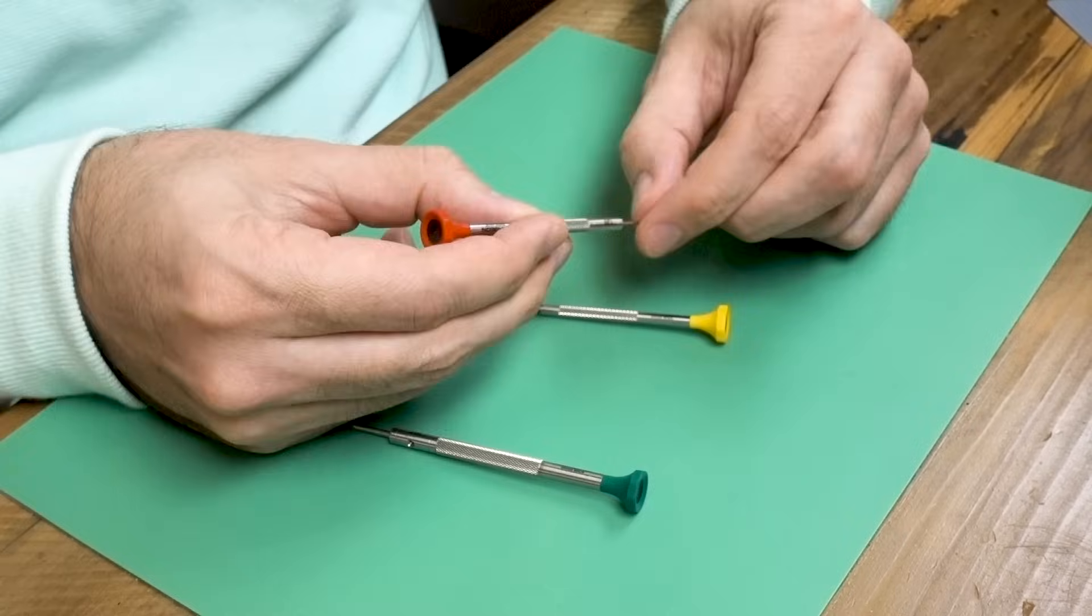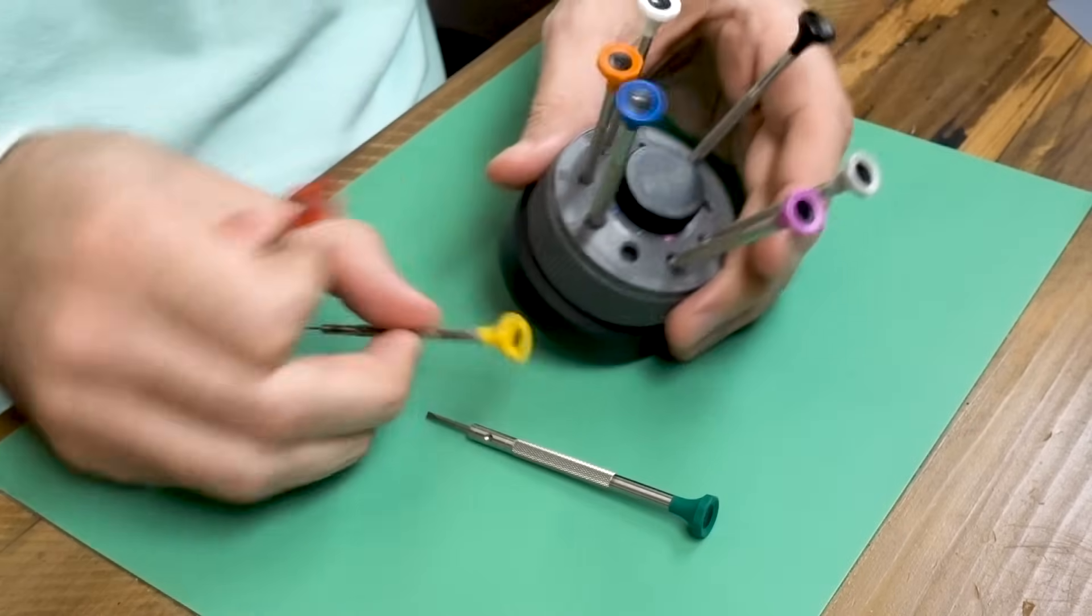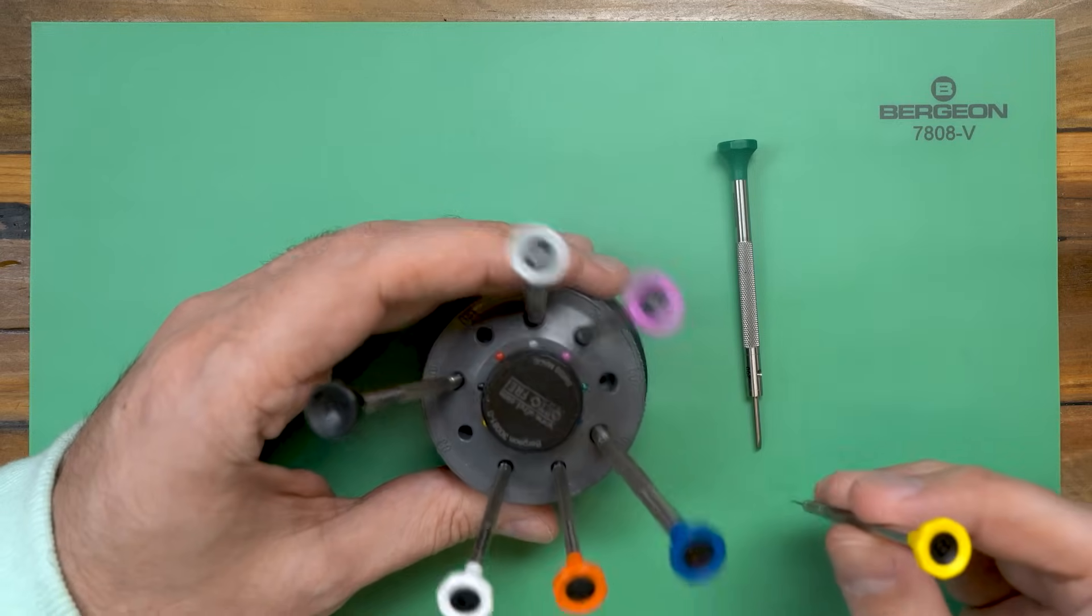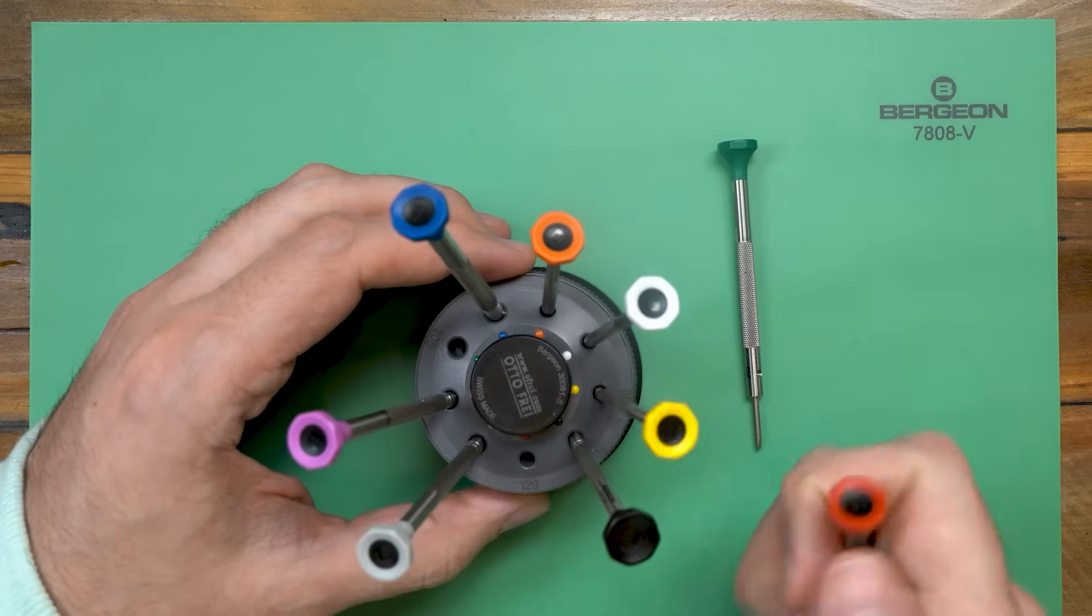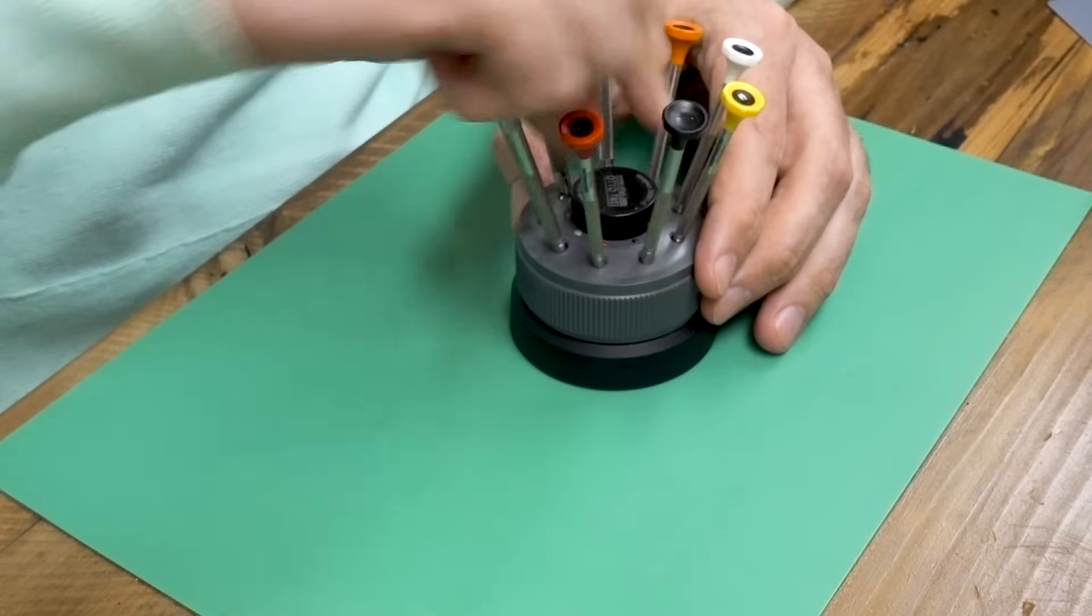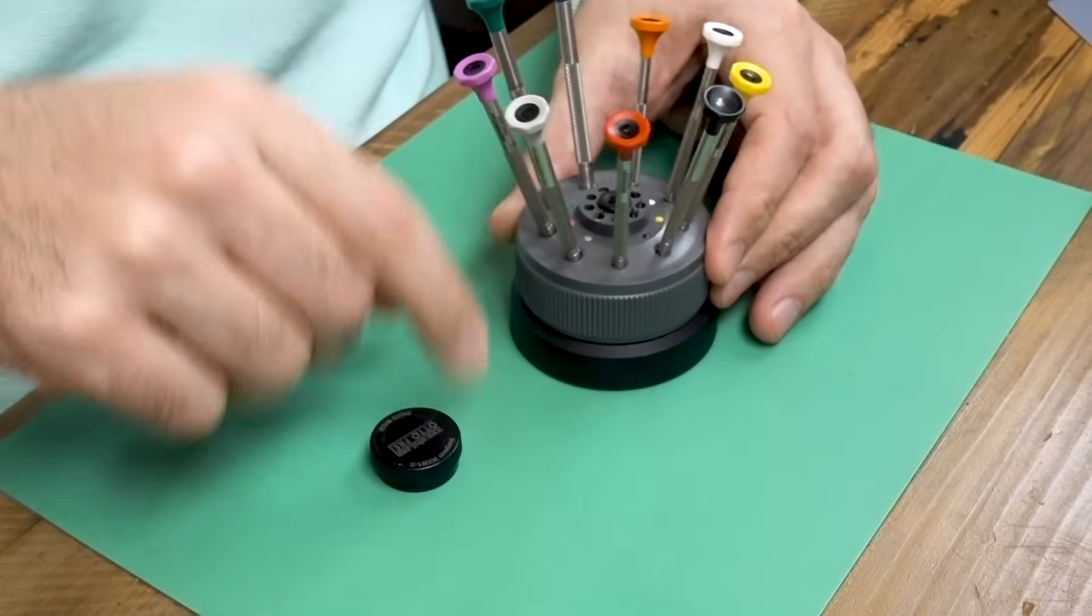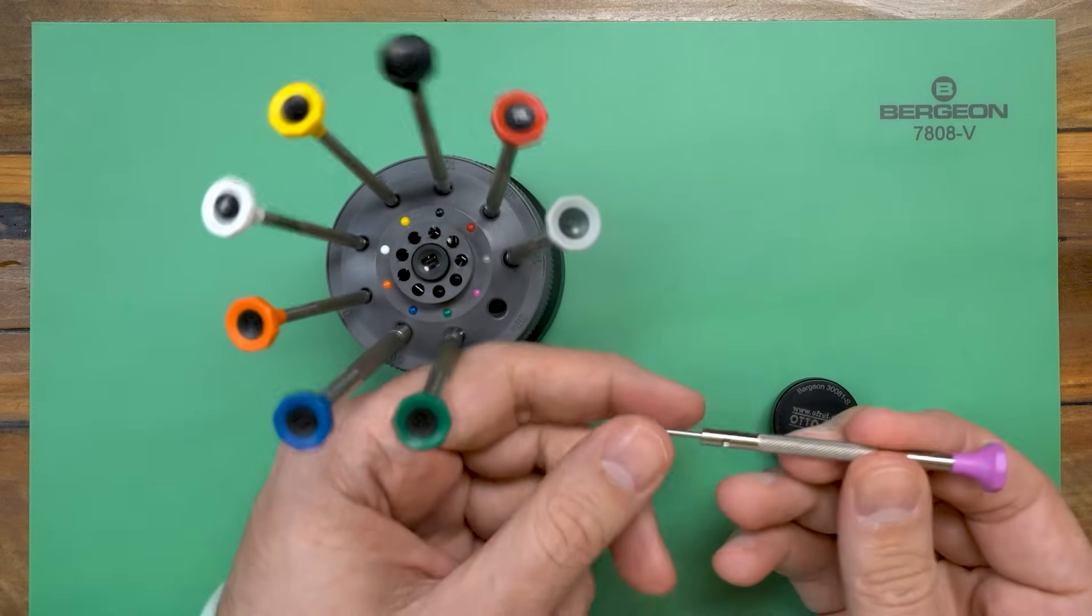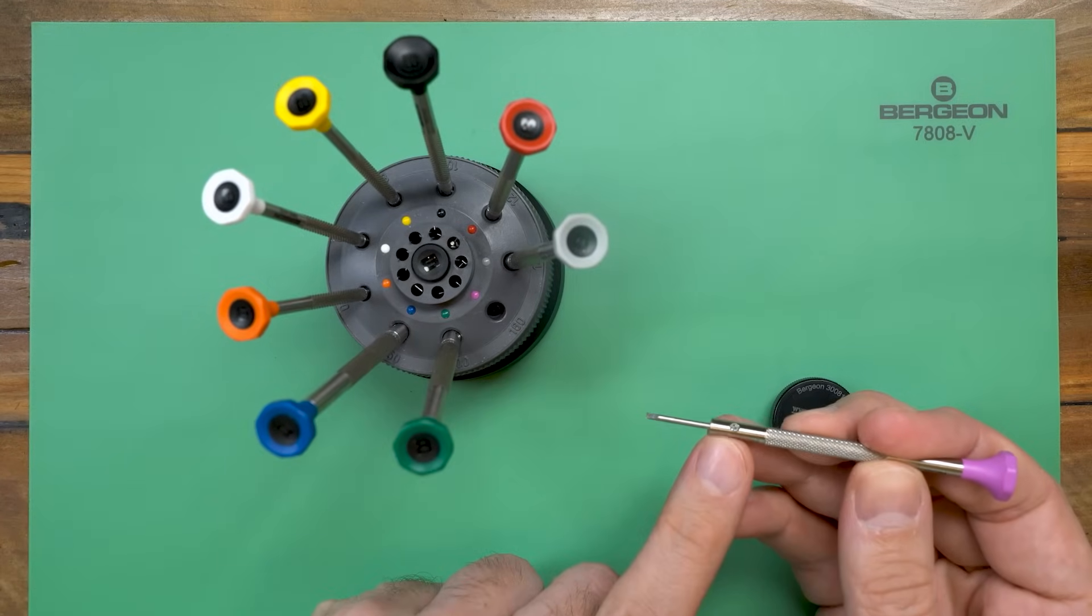But mostly you'll want to get a set of nine or twelve so that you can have all your bases covered. The set of nine that I use are from Bergeon and they were about a hundred and twenty dollars. One big advantage of these nice screwdrivers is that the blades are replaceable so that you can basically use them for a lifetime.